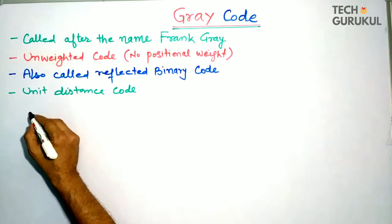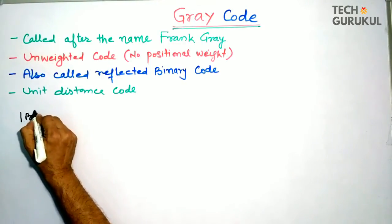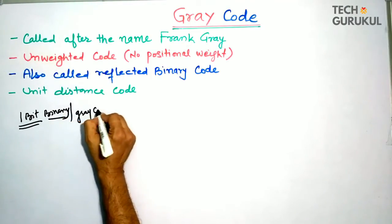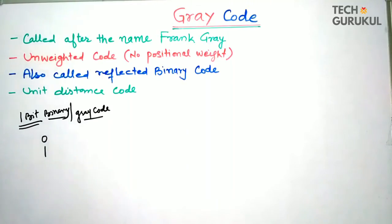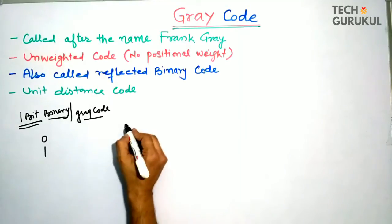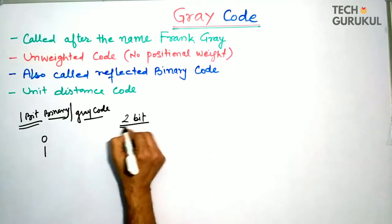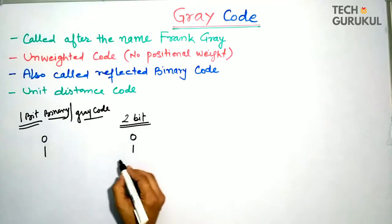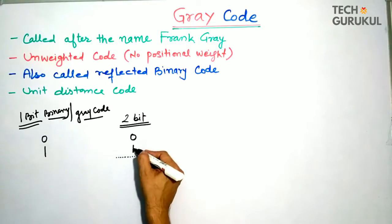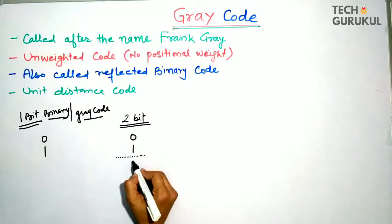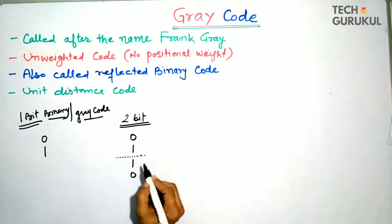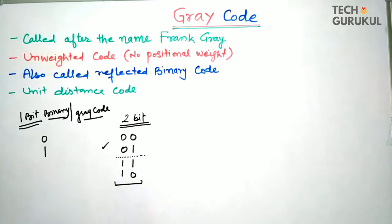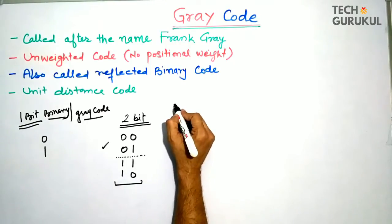For one-bit Gray code, the values are simply 0 and 1, same as binary. For two-bit Gray code, we write down 0 and 1, then take the mirror image — the mirror of 0 and 1 gives 1 and 0 below. We write 0 as the upper half prefix and 1 as the lower half prefix. This gives us the two-bit Gray code.